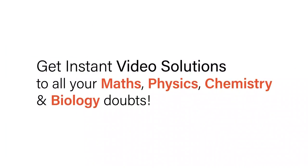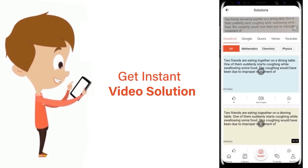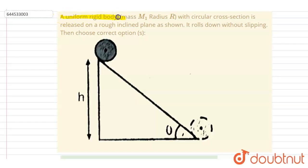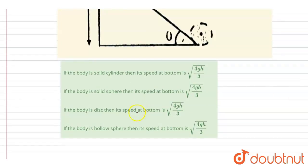A uniform rigid body with circular cross section is released on a rough inclined plane as shown, and rolls without slipping. Choose the correct option. The options are all about the speed at the bottom — for example, if it is a hollow sphere, what is the speed at the bottom?